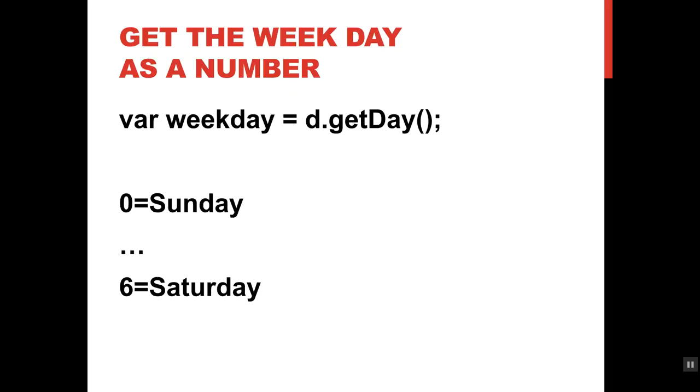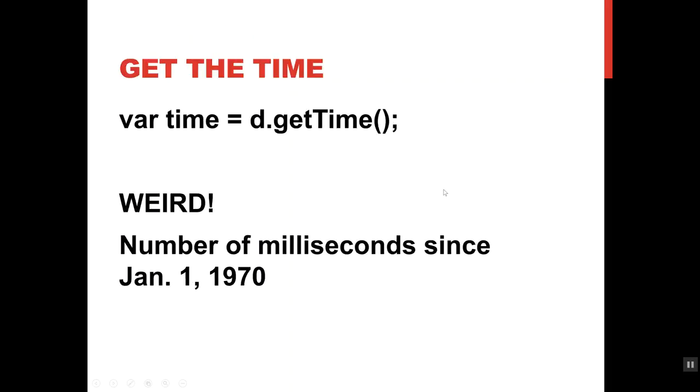You can get the time, but this one's weird. If you get the time without breaking it into component parts, it gives you the total number of milliseconds that have elapsed since January 1st, 1970. This probably won't be that useful for you unless you're doing some kind of timing.